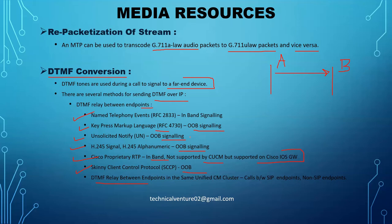Unsolicited notify transports DTMF digits using SIP notify messages and is also out-of-band. The message body in the notify message contains 10-character encoded digit, volume, and duration which describes the DTMF event. H.245 signal and H.245 alphanumeric are both out-of-band signaling that utilize the signaling channel to provide an out-of-band way to send DTMF digits.